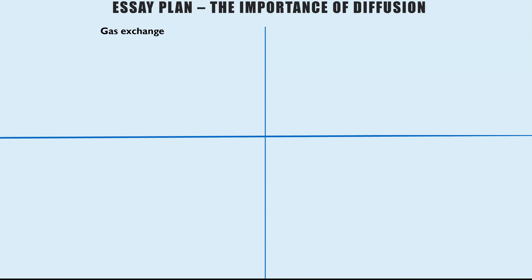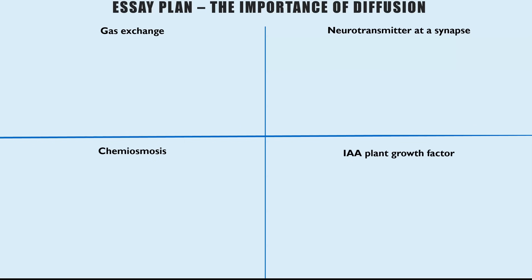The first step is to pick four topics — you can do two extra boxes if you want to go for six. You need to think of four topics relevant to the title, which in this case is diffusion. I'm going to go for gas exchange, neurotransmitters diffusing across the synapse, chemiosmosis — the facilitated diffusion of hydrogen ions — and the diffusion of IAA, the plant growth factor.